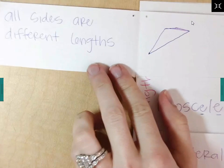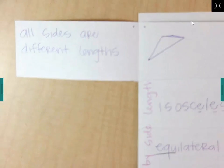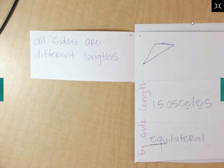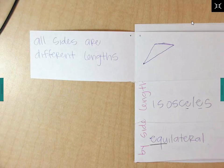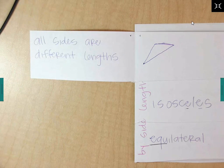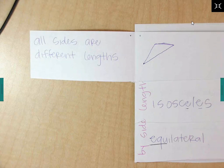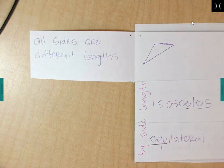The first one, in a scalene triangle, all sides of the triangle are different lengths. All of the line segments are different lengths. One's shorter than the other, one's middle, one's long. All of them are different.